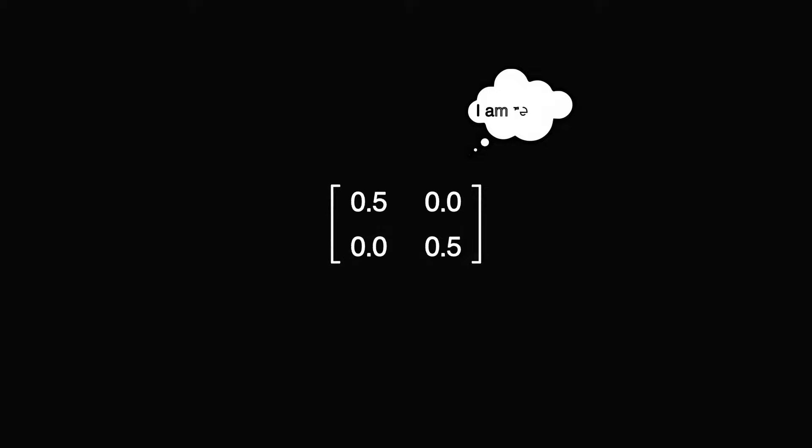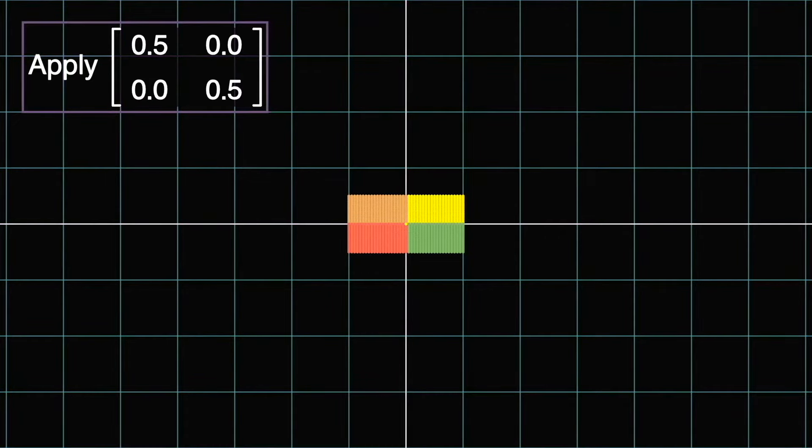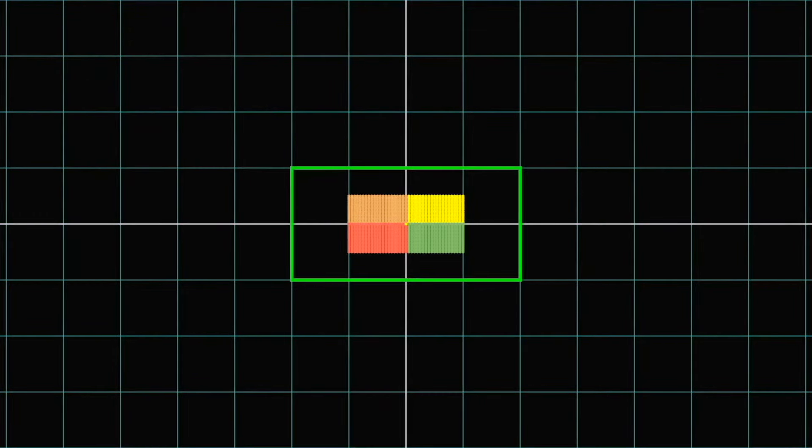We see our dots moving inwards, and the border of the dots still forms a rectangle. It seems this kind of matrix has ability to scale things uniformly.